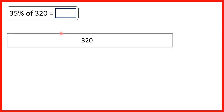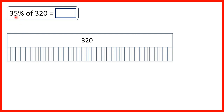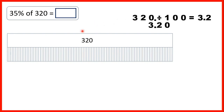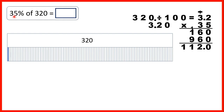Let's find 35% of 320. We represent 320 as one large bar. The first method is to divide by 100 and then multiply by the percentage, so we show 100 1% bars. We divide 320 by 100 to get 3.2, which is 1%. Then we multiply by 35, giving us 112. So 35% of 320 is 112.